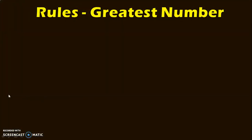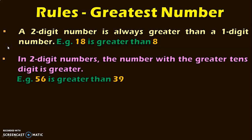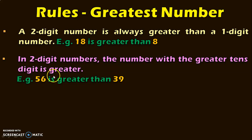Let us move on to identifying the greatest number in a series. Here again we have three rules, similar to but the reverse of the smallest number rules. First: a two-digit number is always greater than a one-digit number. For example, 18 is greater than 8. Second: in two-digit numbers, the number with the greater tens digit is greater. For example, consider 56 and 39 — we have 5 in the tens place and 3 in the tens place. Since 5 is greater than 3, we conclude that 56 is greater than 39.